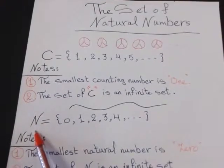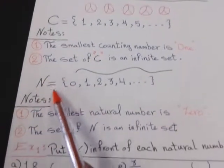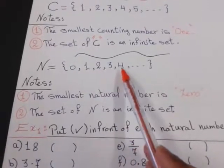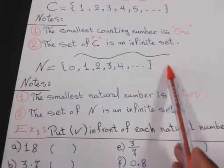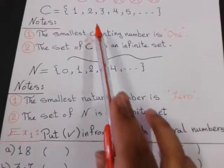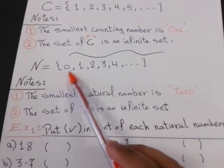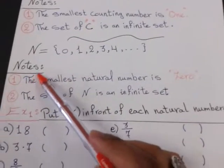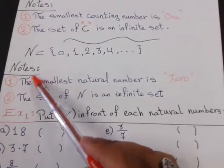What is the natural numbers or N? N equals 0, 1, 2, 3, 4, and so on. The same as counting numbers, but I add 0 at the beginning of the set. We have also two notes on this set.